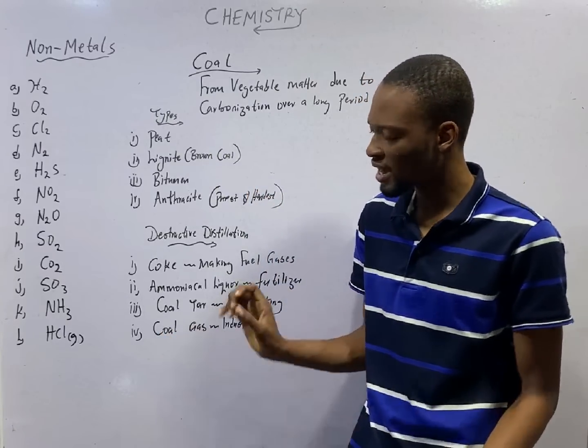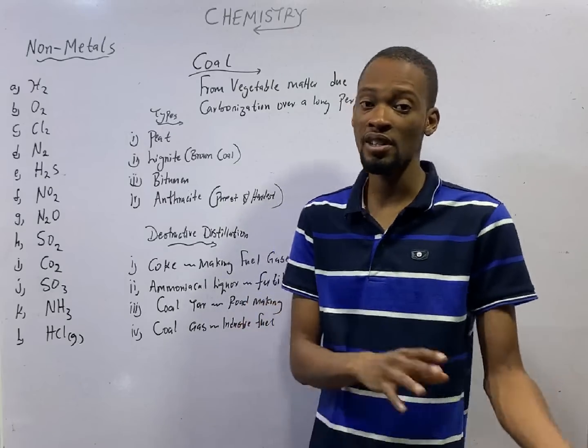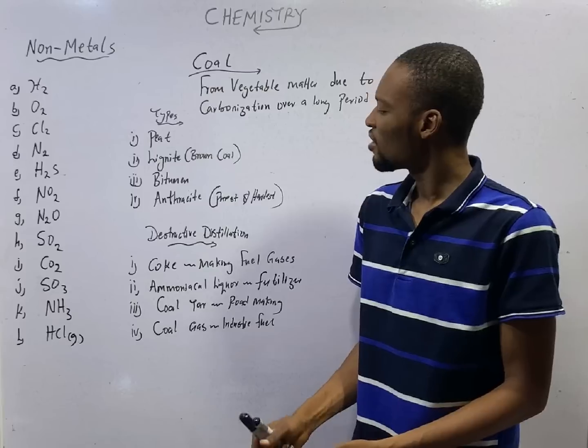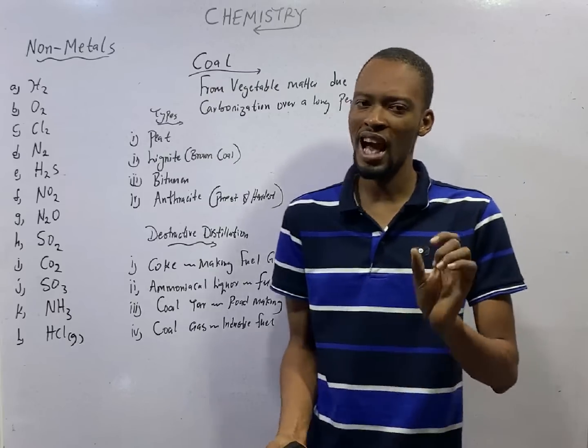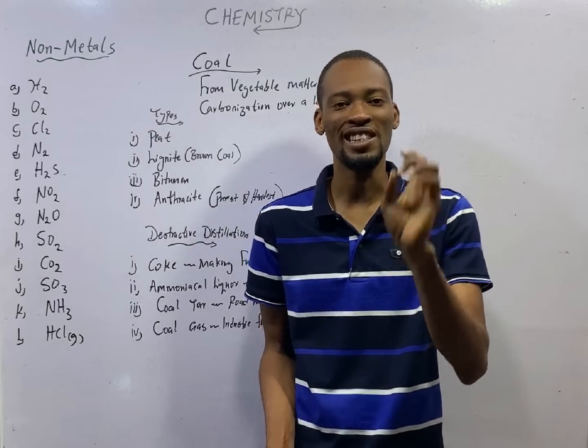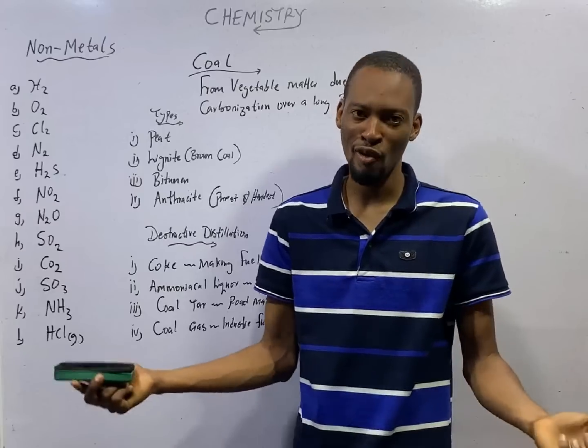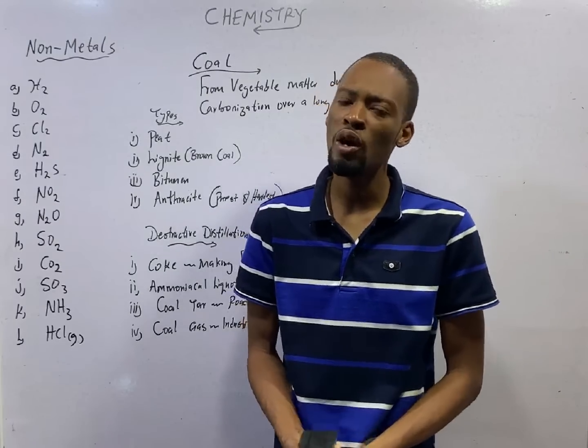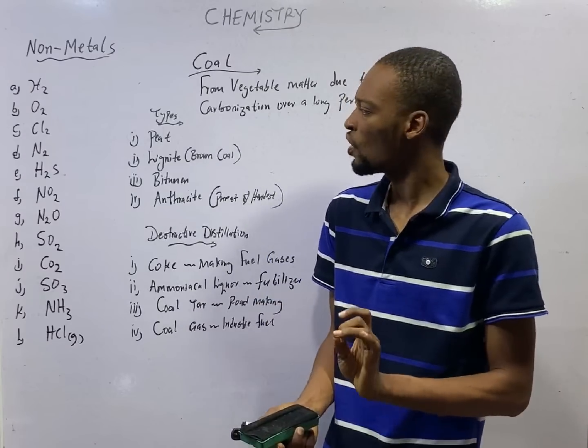And coal gas, which is used as industrial fuel in the industry, is a product. So, ladies and gentlemen, burning coal in the absence of air is referred to as the destructive distillation of coal. And the products are Coke, Ammoniacal Liquor, Coal-tar, and Coal gas.